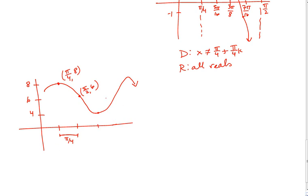So that means that the next big points are going to be another pi over 4, another pi over 4, and another pi over 4. So a whole period is going to be pi over 4 times 4, which is pi.